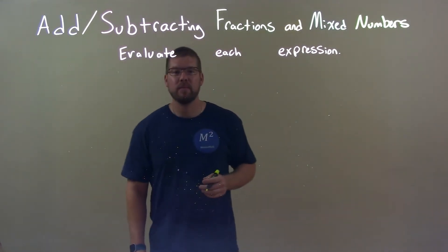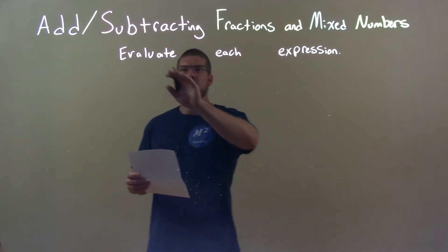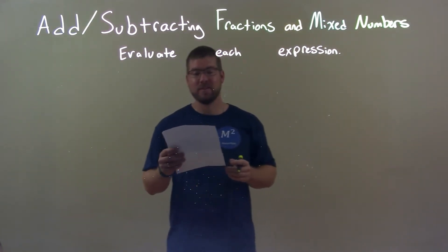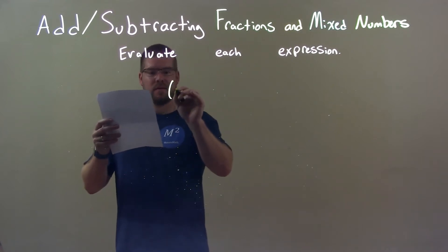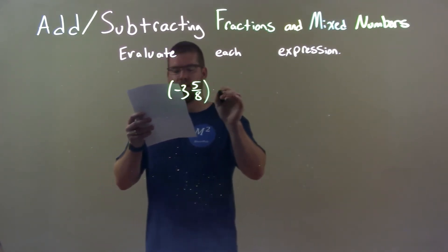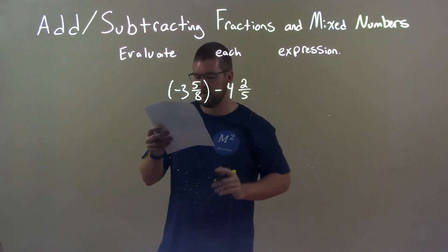I'm Sean again and this is Minute Math and today we're going to learn about adding and subtracting fractions and mixed numbers and evaluate each expression. So if I was given these numbers: negative 3 and 5 eighths minus 4 and 2 fifths.